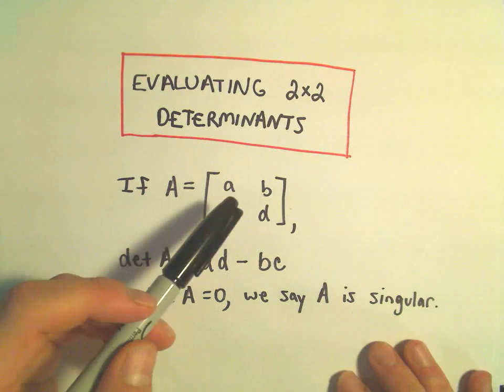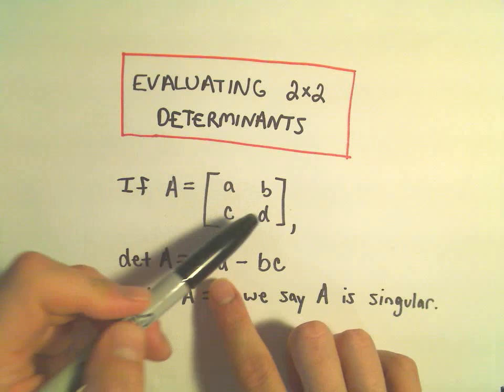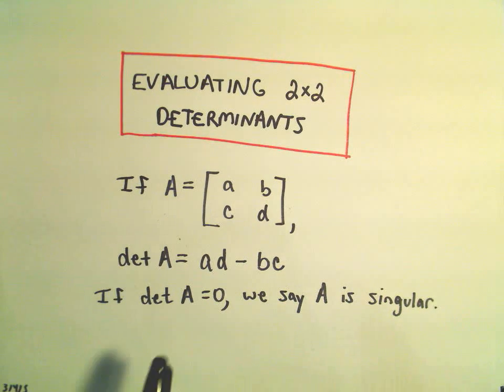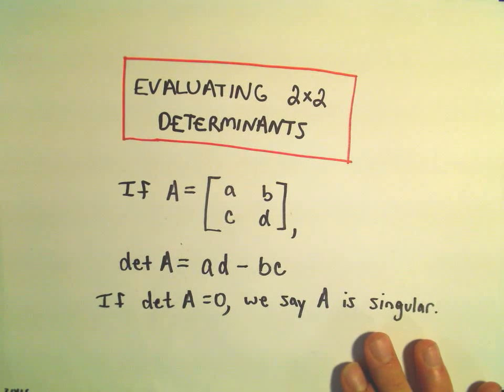we simply sort of do like a little cross multiplication. We take a times d and then subtract away the product of b times c. If this determinant equals 0, we say that matrix A is a singular matrix, so just some terminology.